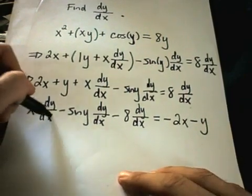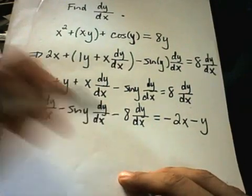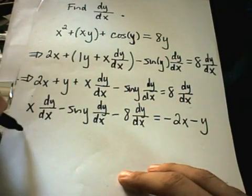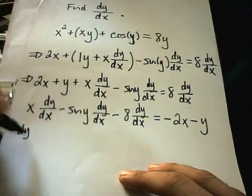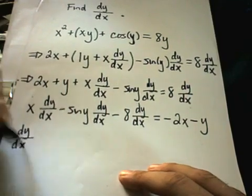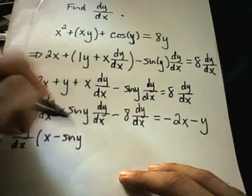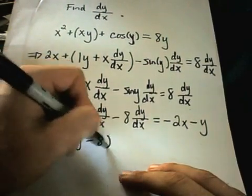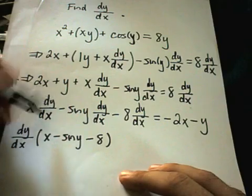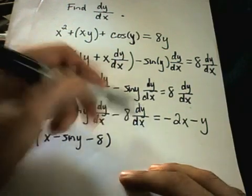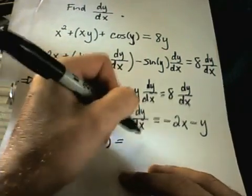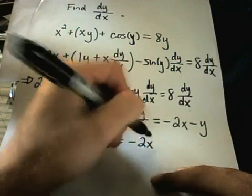Now, the point of doing this is, everything on the left has a dy dx in it, so I can factor that out. So, I'll pull out the dy dx, and I'm left with x minus sine y minus 8. There's nothing left to do on the right-hand side.